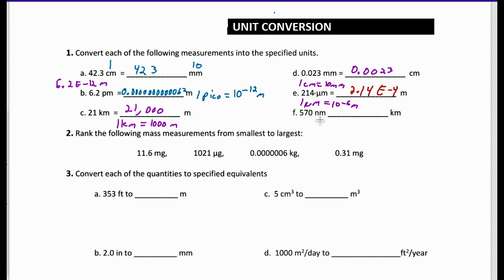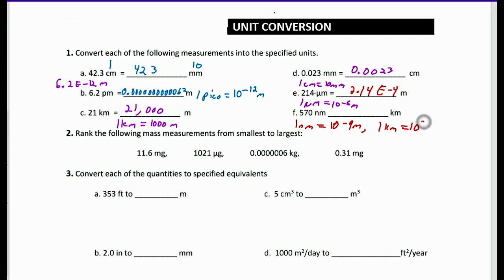Next, we have 570 nanometers, still sticking with the small trend. One nanometer is equivalent to 10 to the negative 9th meters. But we don't have meters here — we have kilometers. And we know that 1 kilometer is equivalent to 10 to the 3rd meters. The important thing to note here is that nanometers is small and kilometers is big, so our number should be very, very small, because we're going from a small unit of measurement to a big unit of measurement.